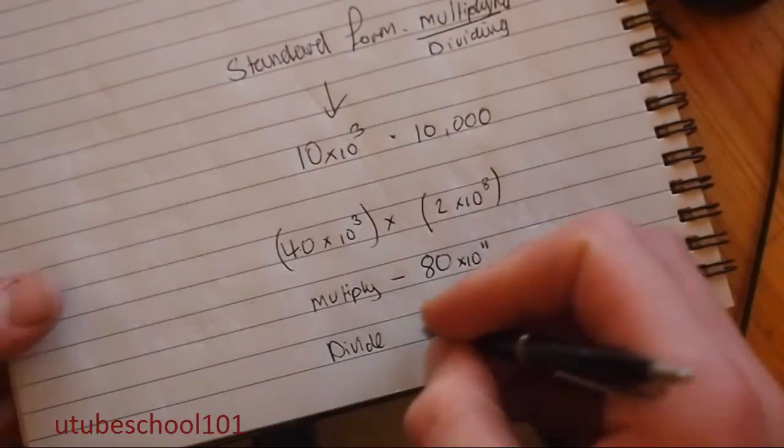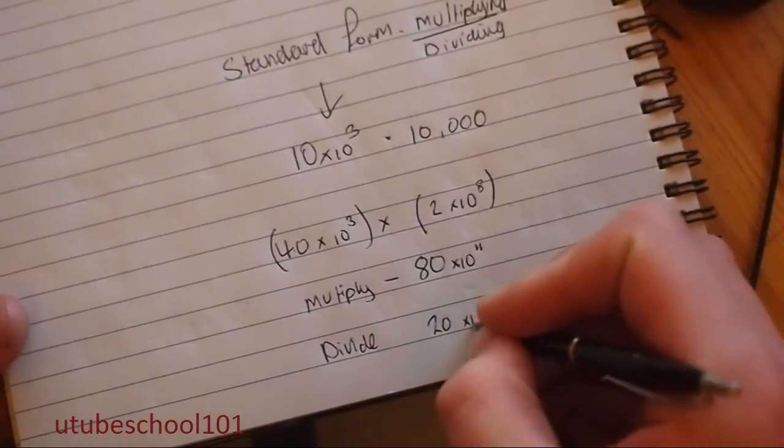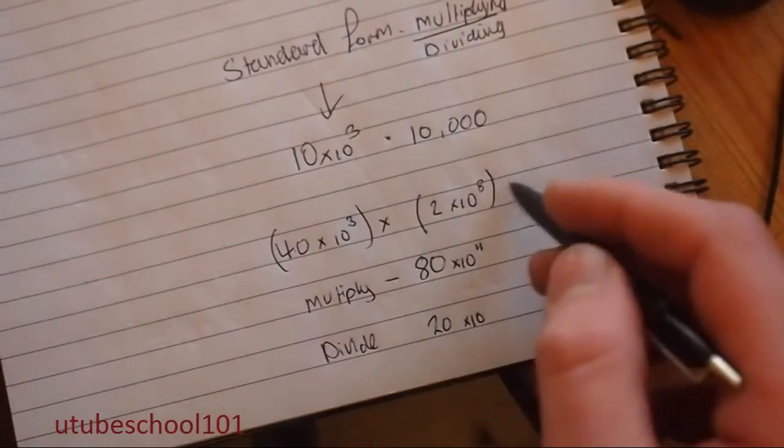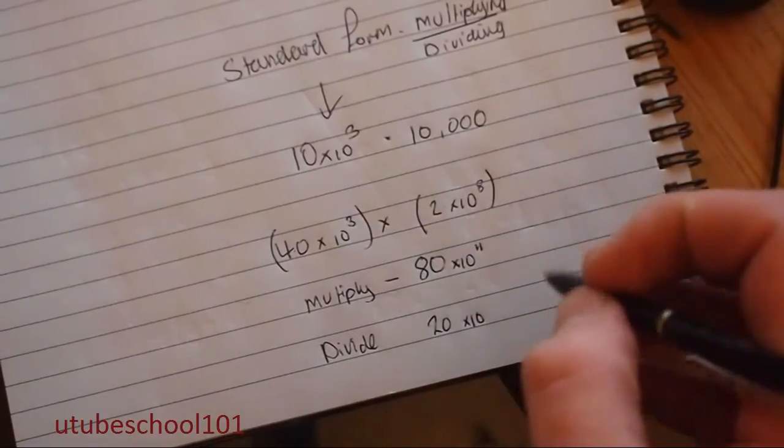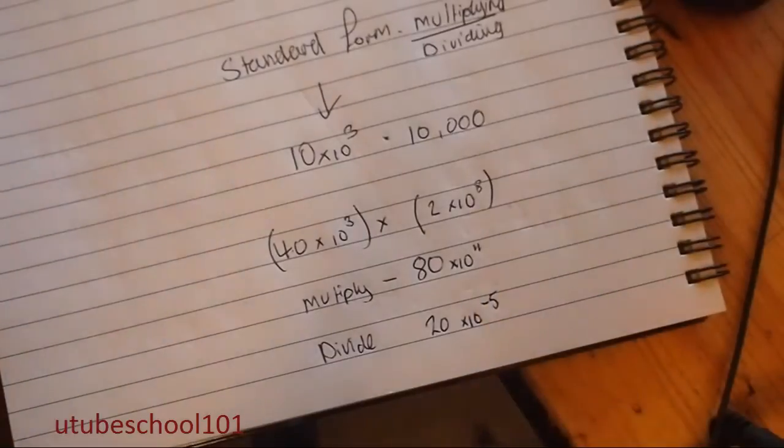So you do 40 divided by 2, which is 20. You still write it times 10. And now you take it away. So 8 take away 3 is minus 5. So it would be 20 times 10 to the negative 5.